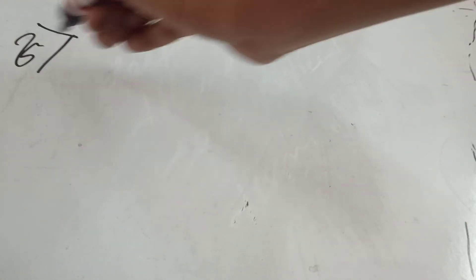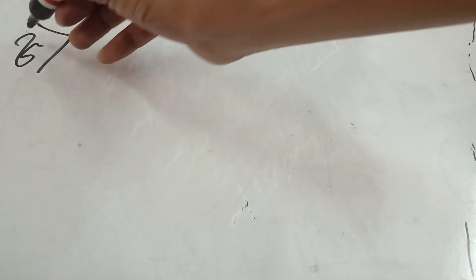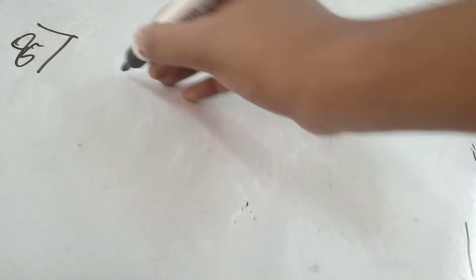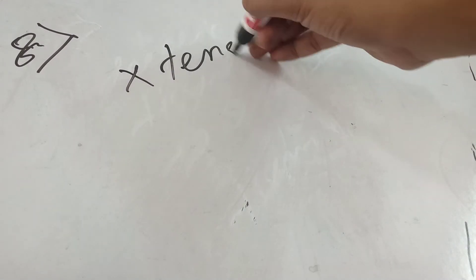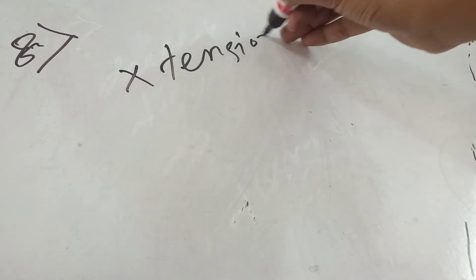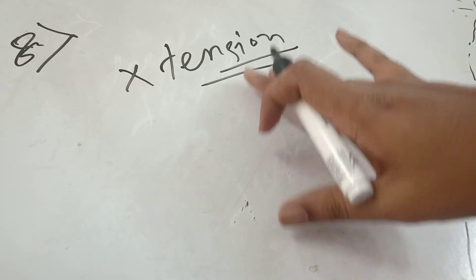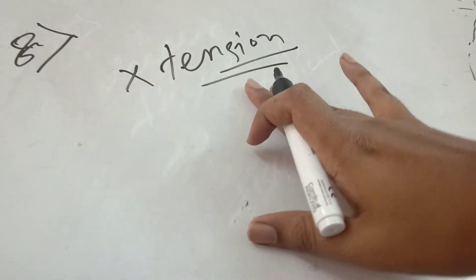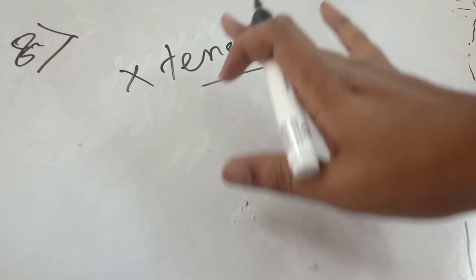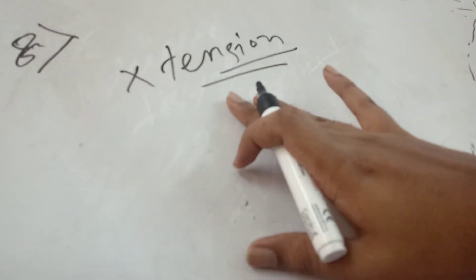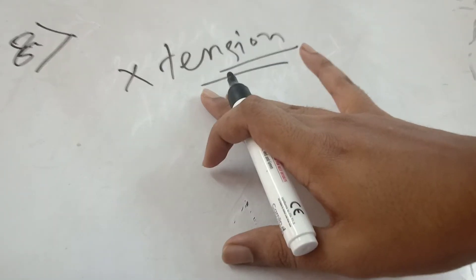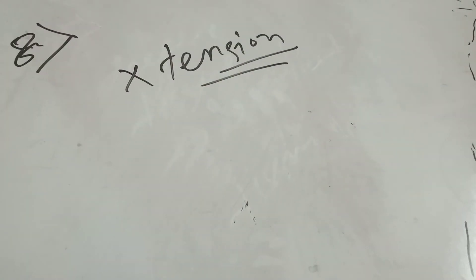Eighth principle: tissue must not be sutured under tension. If there is tension, the tissues should be undermined prior to suturing. Never suture under tension.